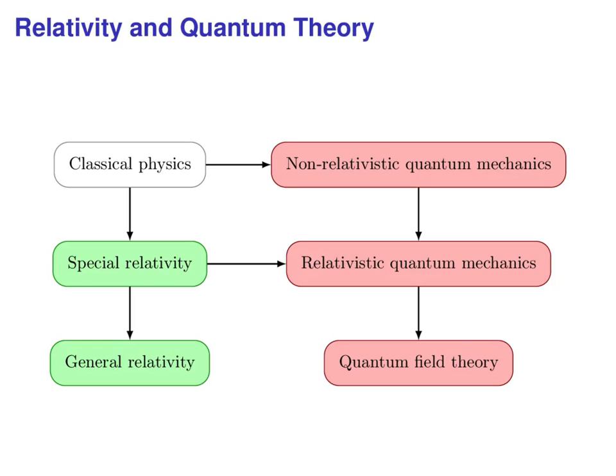We have special and general relativity and we have non-relativistic and relativistic quantum mechanics and quantum field theory. The contradiction only consists between general relativity and quantum field theory.